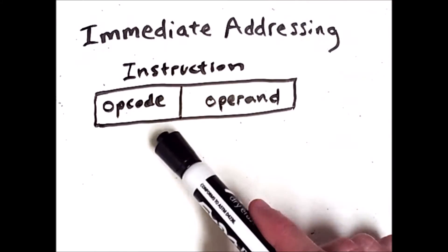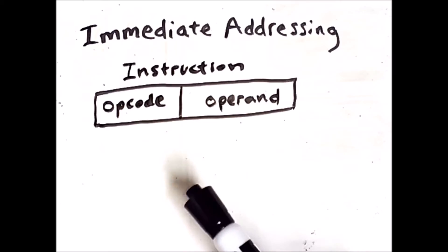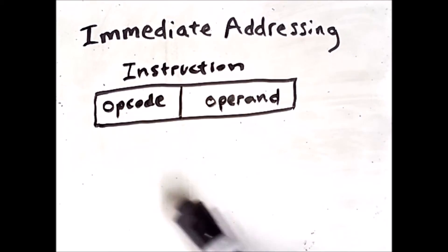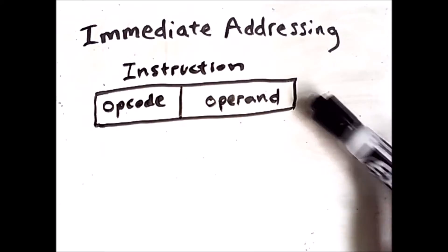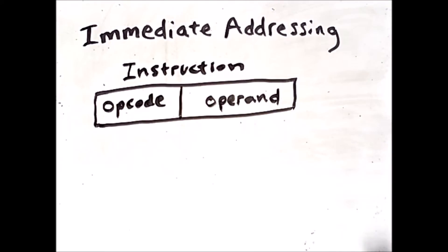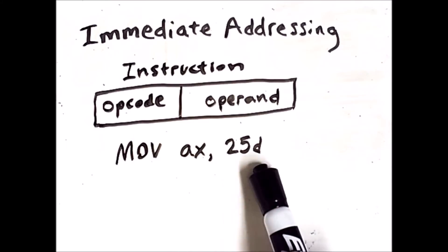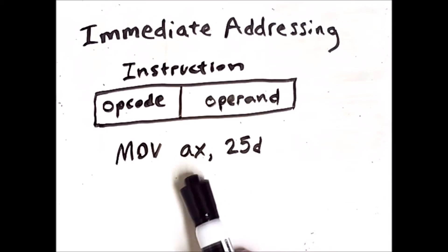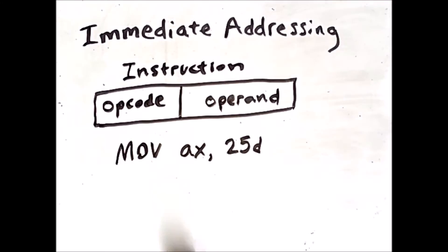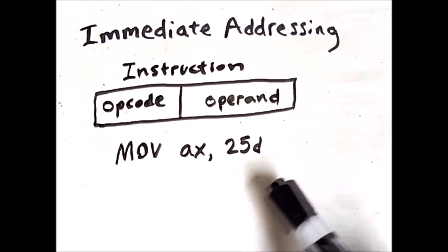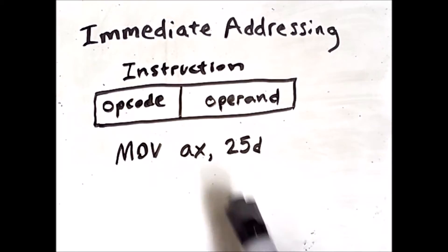When you look at specific machine instruction architectures, there may be some other bits that define other parts of the instruction, but the main bits to be aware of are the opcode and, in the case of immediate addressing, the operand. An example of this in x86 is the move command, which will put the decimal value 25 into the register AX. Note that this instruction actually has two operands, and only one of them is using immediate addressing — specifically 25.